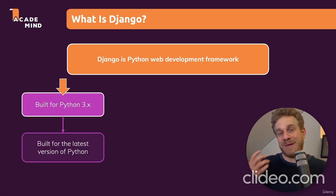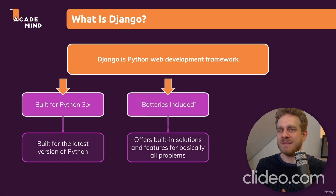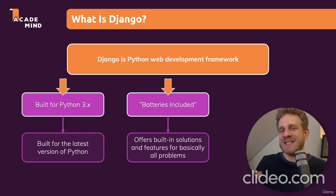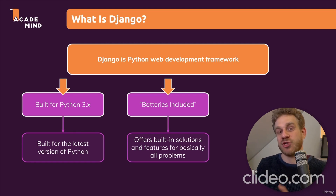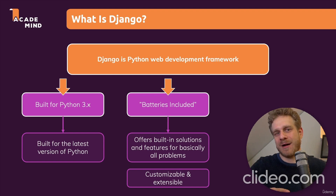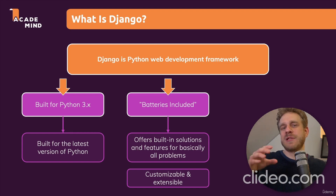Django is built for Python 3.x — the latest version of Python — and it follows a batteries included approach, which basically means that it has a solution for everything. You don't need to install a ton of extra libraries and packages to build a real project. Django covers all these typical problems which you face when building a website, and it has a solution built in. And it is still extensible and customizable — just because it has a clear set of rules and a batteries included approach does not mean that you wouldn't be able to customize and fine-tune it.